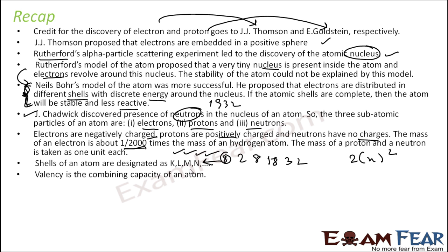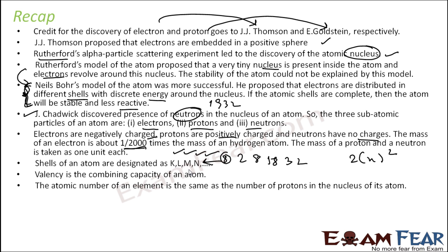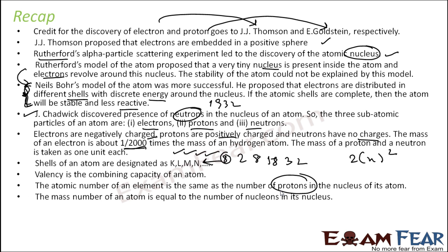Valency is nothing but the combining capacity of an atom. Atomic number is nothing but the number of protons — please note, atomic number is nothing but the number of protons. And the mass number is equal to the number of nucleons in the nucleus, that is number of protons plus number of neutrons. Electrons are not in the nucleus.